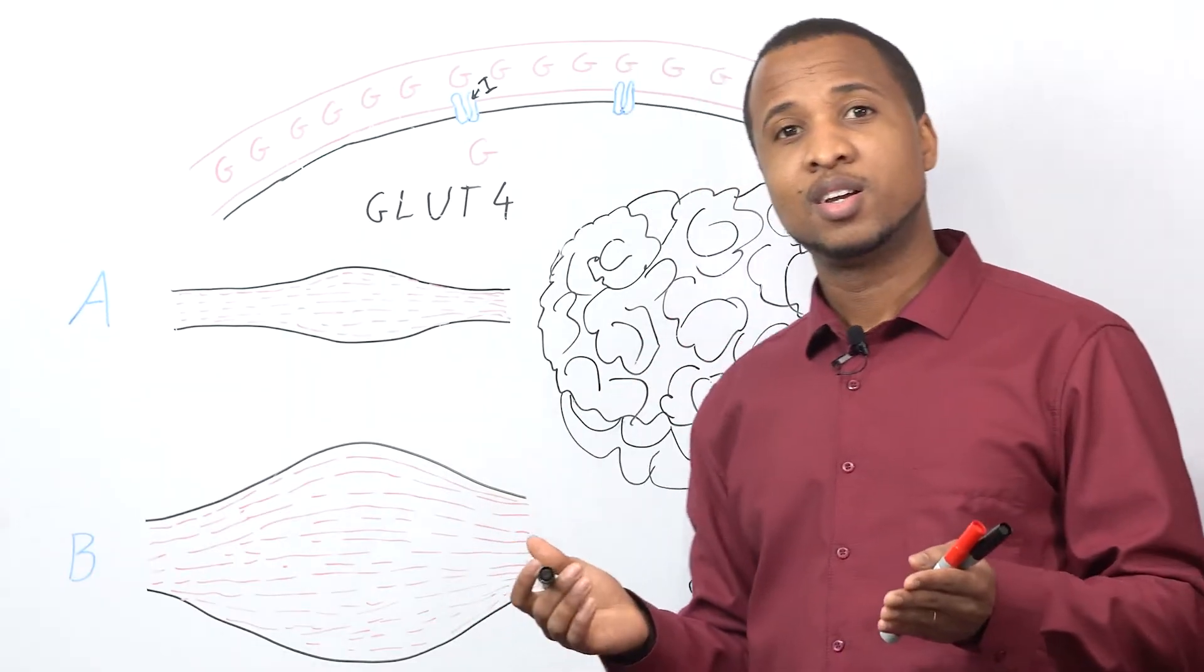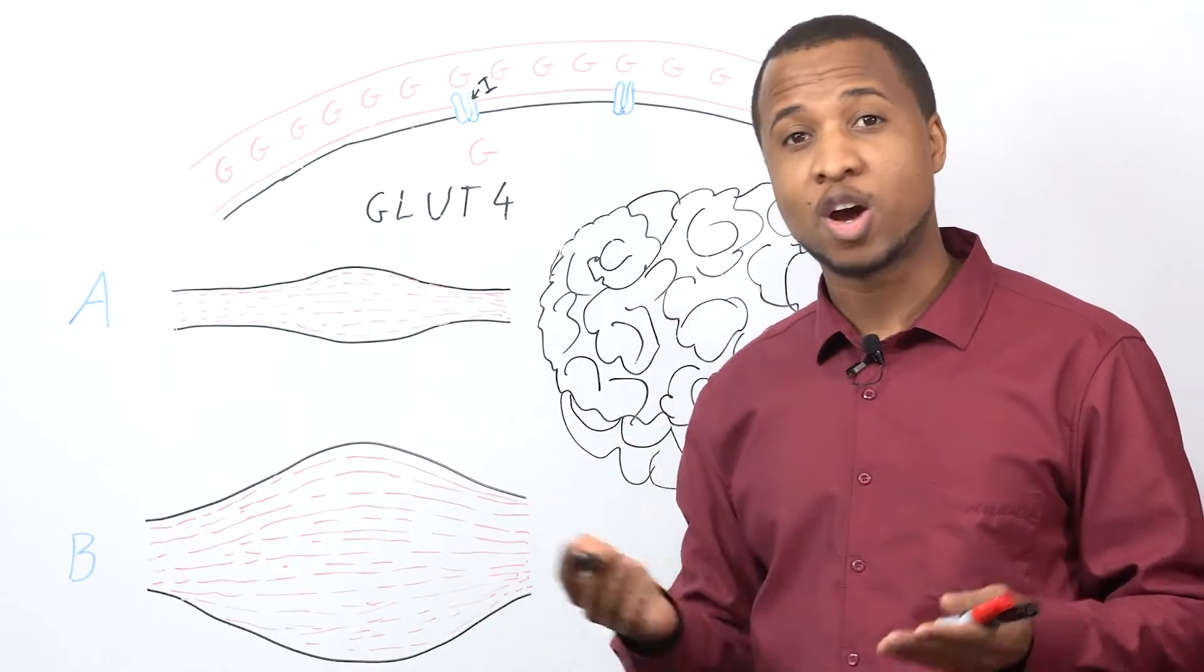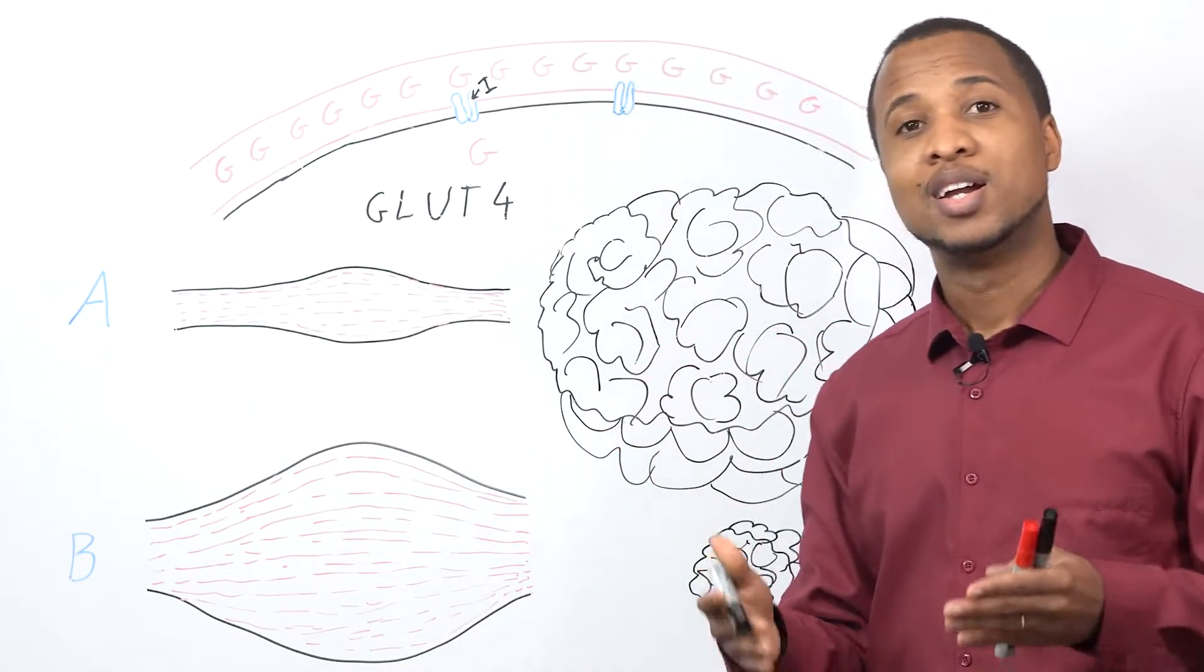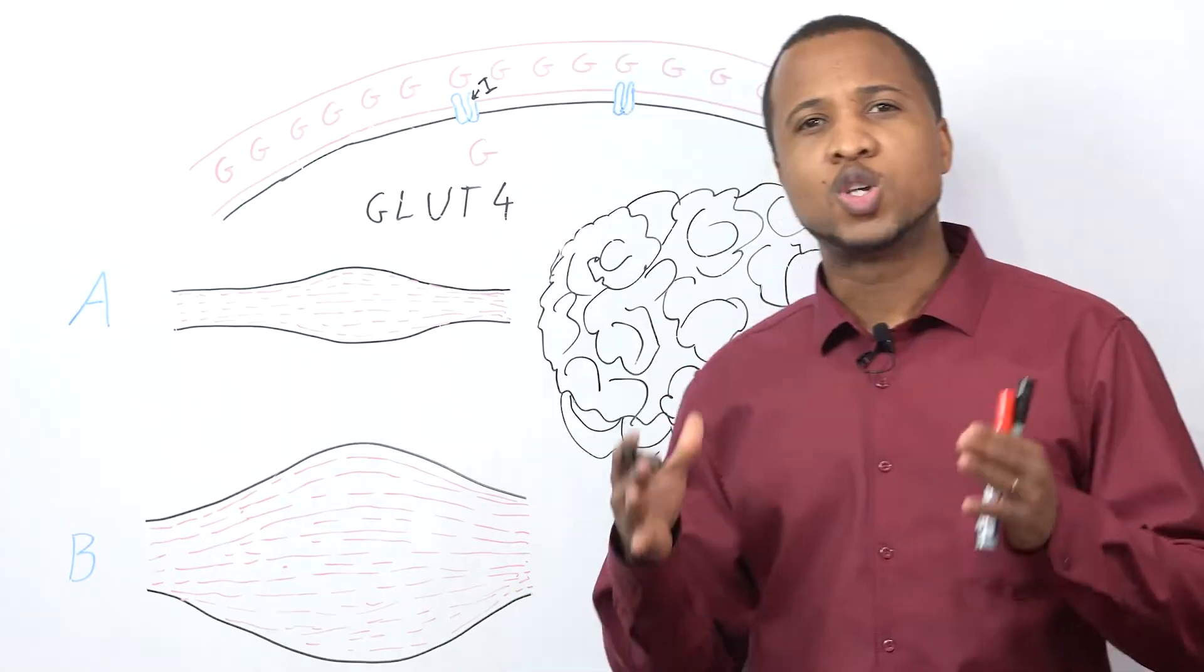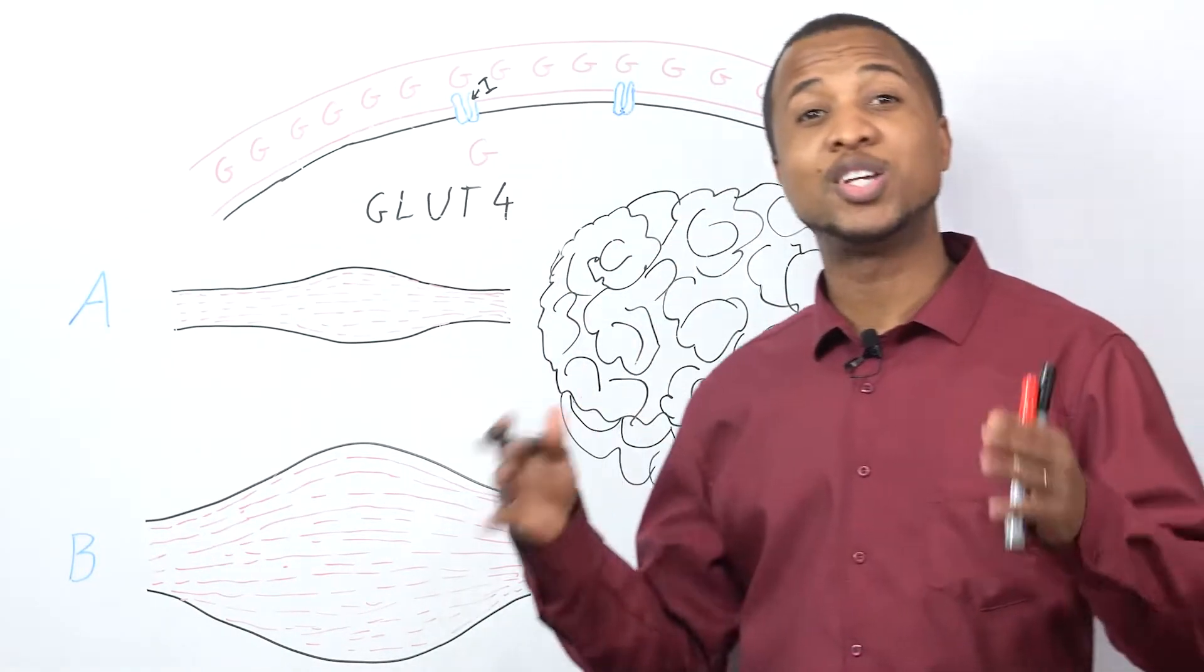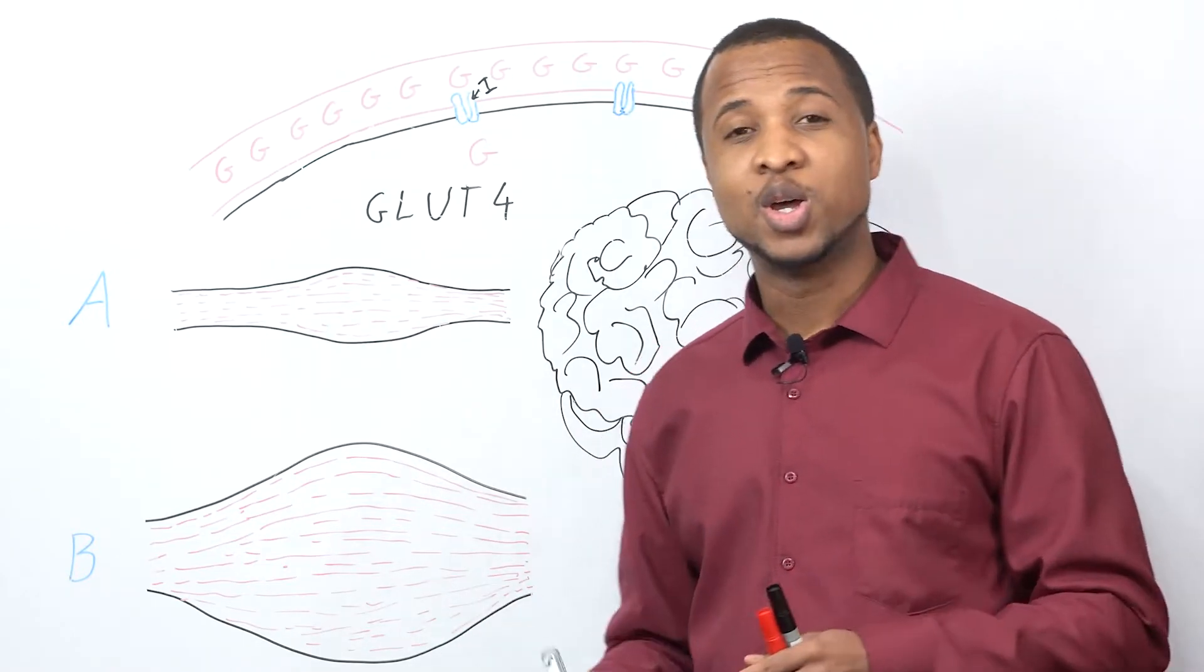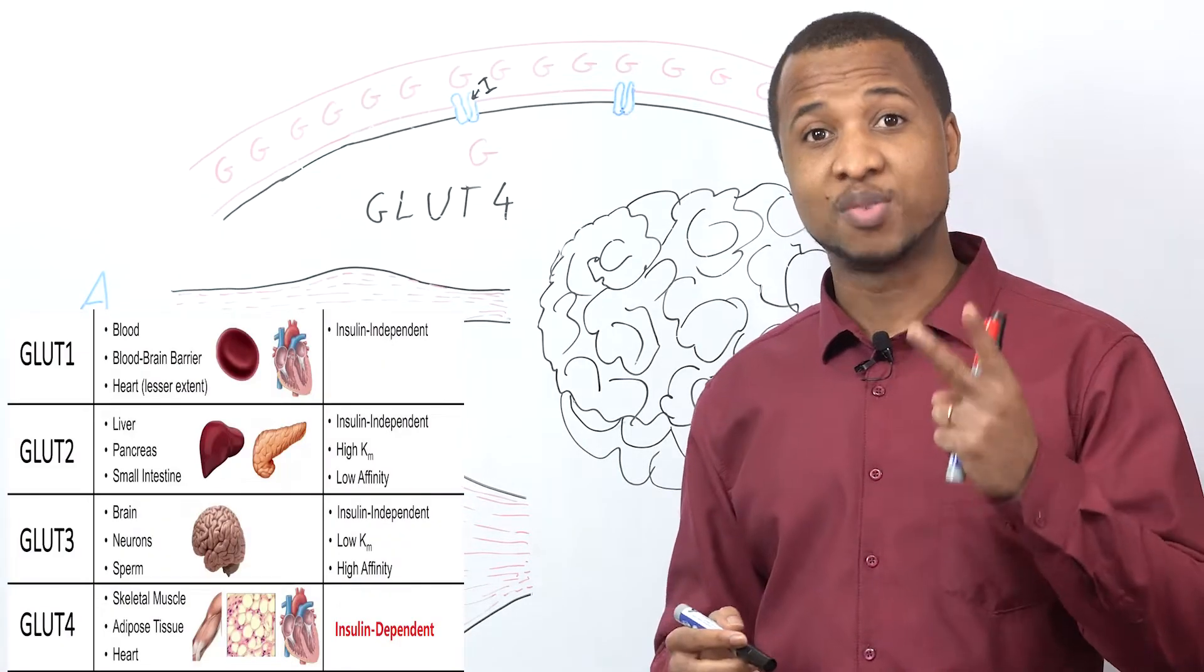And it makes sense, right? You don't want to be writing an exam and then you realize that your brain is not working because there's no insulin. So your brain doesn't need insulin. So when we're talking about insulin, when we're making all that noise about insulin, you know, it needs to get glucose into the cells and this and that, we are basically talking about two types of cells.